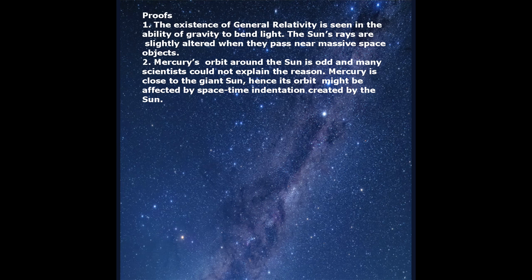Proofs of relativity: The existence of general relativity is seen in the ability of gravity to bend light. The Sun's rays are slightly altered when they pass near massive space objects.